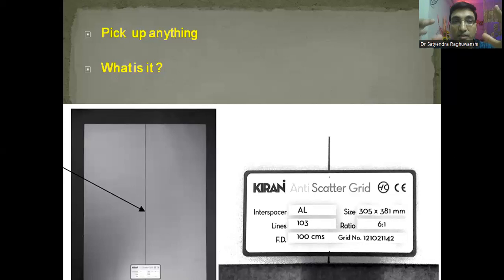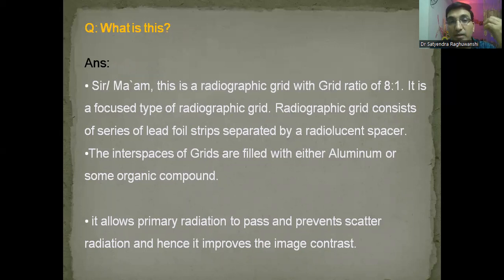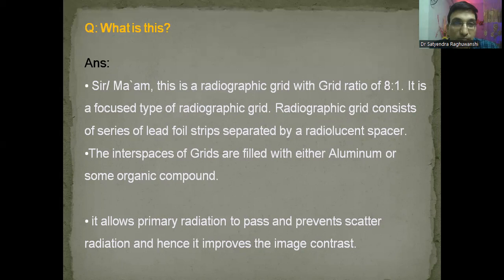What you are supposed to speak is: 'Sir, this is a radiographic grid of grid ratio 8 to 1. It is a focused type of radiographic grid. Radiographic grid consists of a series of lead foils separated by a radiolucent spacer. The interspaces of the grid are filled with either aluminum or some organic compound. The function of the grid is to allow the primary radiation to pass and to prevent the scatter radiation from reaching the image receptor, and hence it improves the image contrast.'